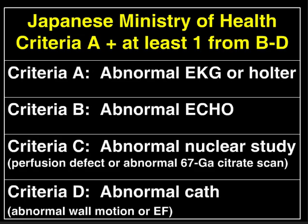Because a diagnosis is so hard to make, the Japanese Ministry of Health has come up with clinical criteria by which a clinical diagnosis of cardiac sarcoid can be made. To get the diagnosis of cardiac sarcoid, you have to have an arrhythmia plus an abnormal anatomic or functional study using either echo, nuclear imaging, or catheterization. Notice that MR currently is not one of the criteria.